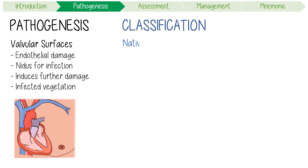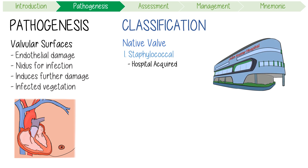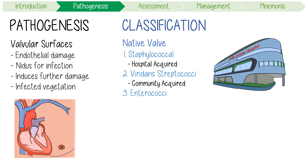It's important to classify different types of IE. Firstly, native valve endocarditis is really caused by three pathogens: staphylococcal, which is most common overall and associated with hospital-acquired infection; viridans group streptococci, which is associated with community-acquired IE; and enterococci.